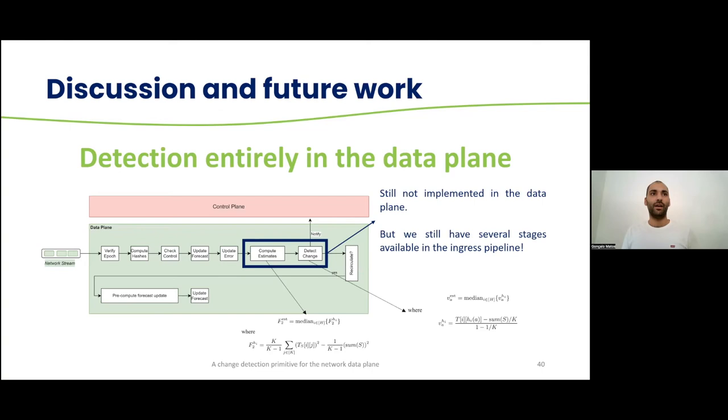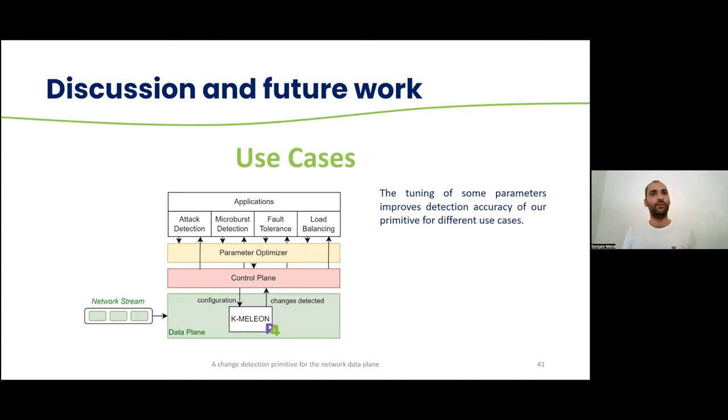As future work, we would like to detect entirely in the data plane, which is still not implemented. We are still missing, as I said before, the computation of the estimates and the detection of the changes, but we still have several stages left in the pipeline, so we think this is still possible to implement inside the data plane. We have still not explored a wider array of use cases, but we know that by tuning some of the parameters, we can improve the detection accuracy of this primitive for different use cases. And potentially, we could also create a parameter optimizer, perhaps, that could optimize the characteristics or the parameters of the solution to perform better for a certain type of use case that we want to tackle.